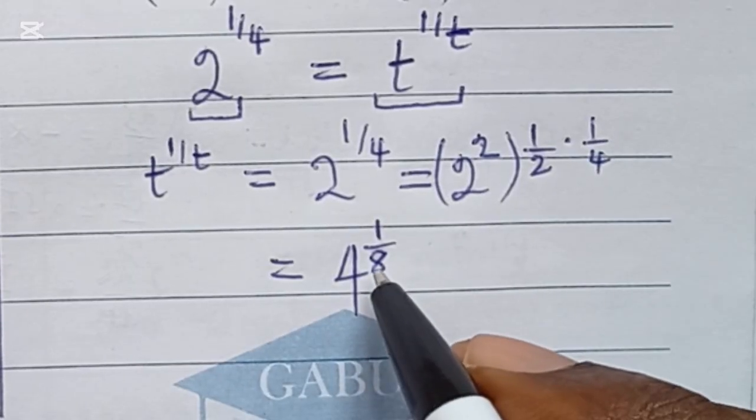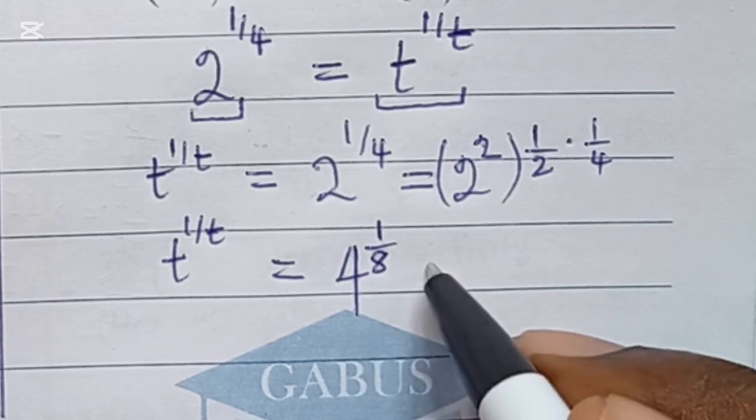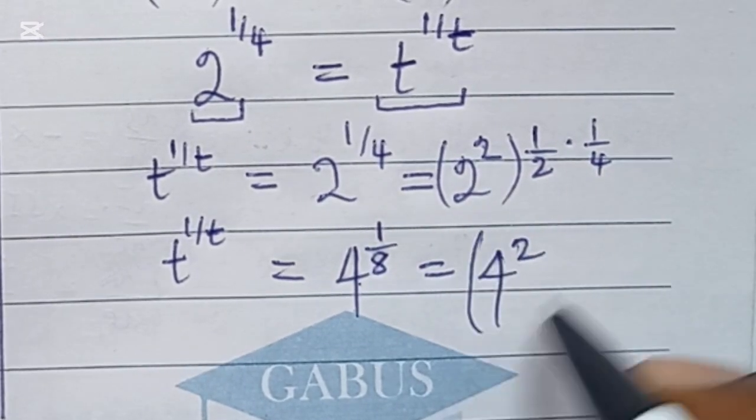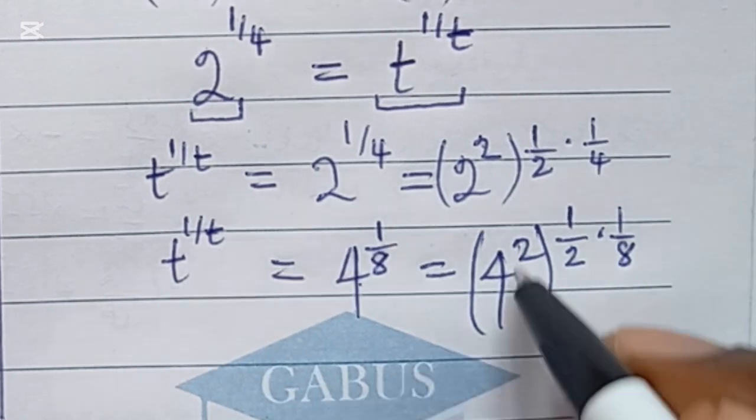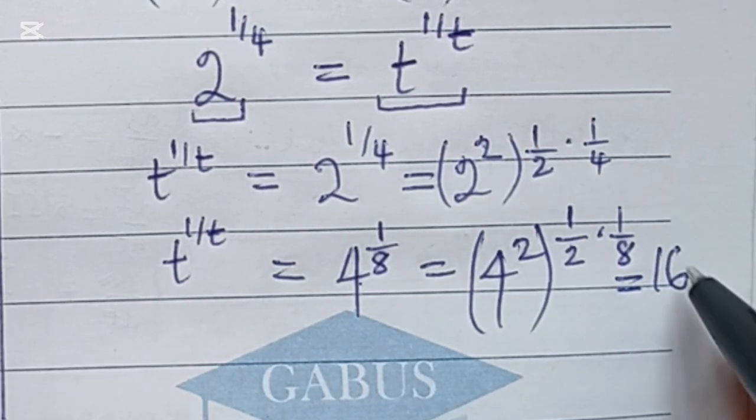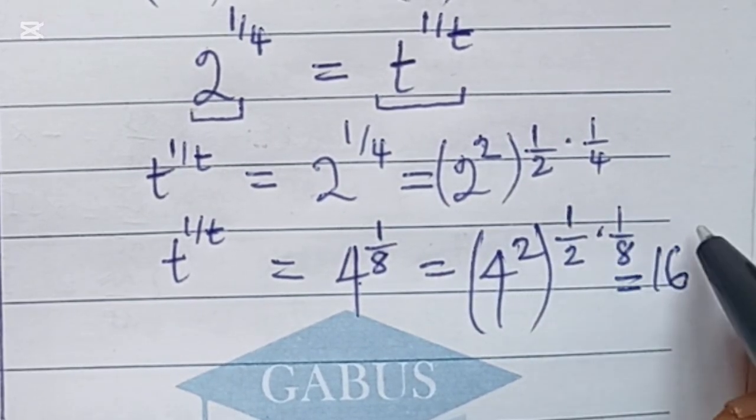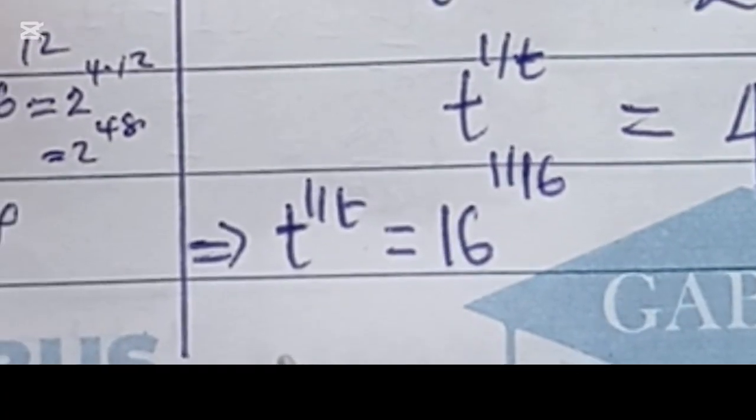We still don't have it equal yet. t to the power of 1 over 4 is still not working because 4 and 8 are not the same. So increase 4 again, that will be 4 squared. When we do that, we bring out 1 over 2 again times 1 over 8. 4 squared, let's evaluate the bracket, we would get 16. And then on the outside, 1 over 2 times 1 over 8 is going to be 1 over 16. You see, we've gotten the answer. This implies that t to the power of 1 over t is equal to 16 to the power of 1 over 16. Simple. You can now see that t is equal to 16.